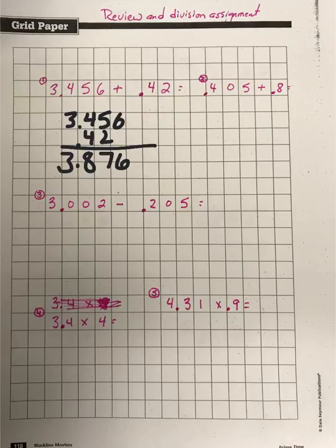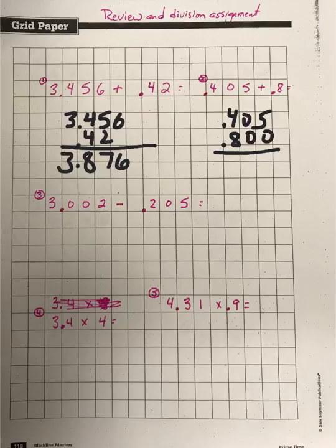On the second question, it's the same thing — line up the decimals and just add like normal. If you're a little confused about this, you can put zeros behind any number after a decimal point. Then bring the decimal point straight down.